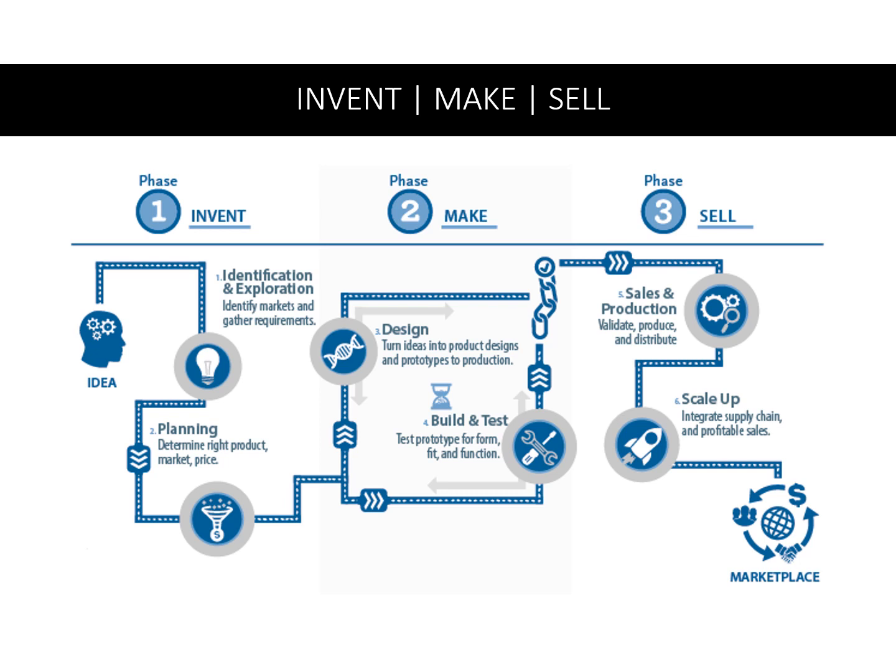From the idea stage, we identify and explore the market and gather all requirements. Next is planning — we determine the right product, market, and price. Then design — turning ideas into product design and prototype. Then build and test — testing the prototype for form, fit, and function. Then sale and production — validating, producing, and distributing the product. Last is scale up — integrating the supply chain and achieving profitable sales for the company.